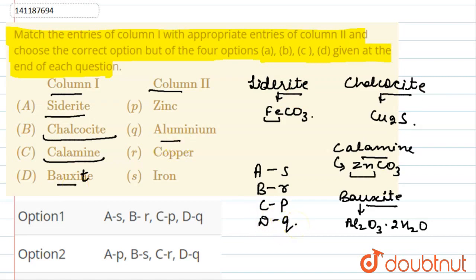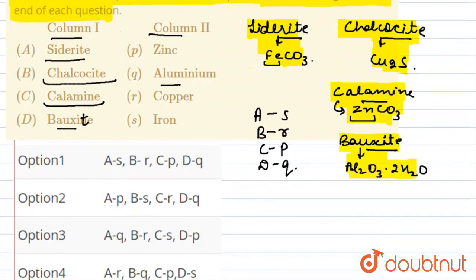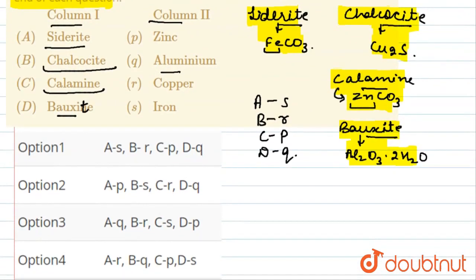To summarize: Siderite is Iron, Chalcoside is Copper, Calamine is Zinc, and Bauxite is Aluminum. Matching these gives us option 1. So the correct answer is option 1. That's all for this question. Thank you.